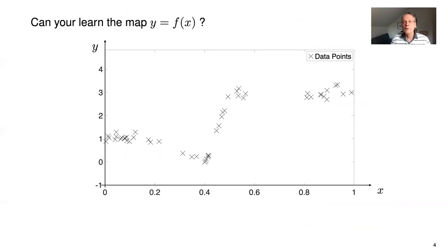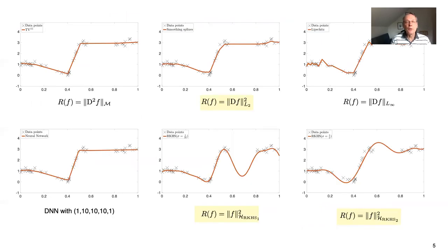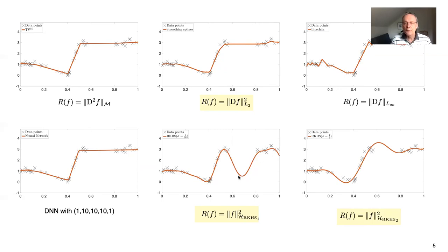Let's revisit the problem with an example. We have some data points and want to learn the map y equals f of x. We can apply a variety of algorithms and see their outputs. The classical ones are kernel methods using Gaussian kernels. If you use narrow kernels, you fit the data well, but in a gap the solution has an artificial drop. If you use a larger Gaussian kernel, you can compensate for that, but at the expense of some ringing and smoothing.